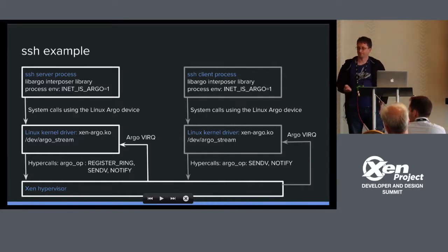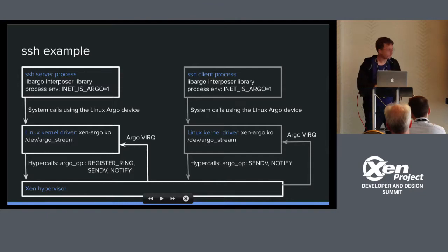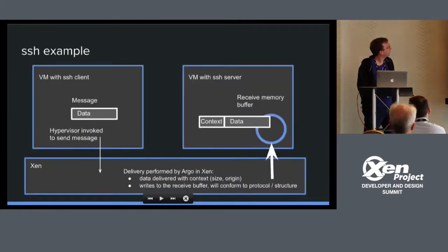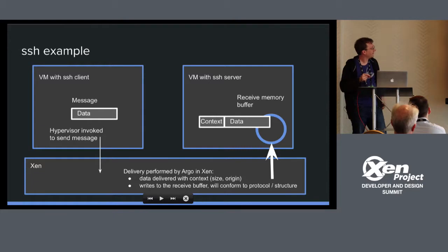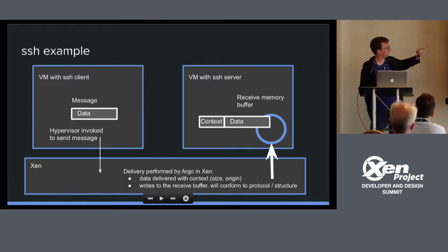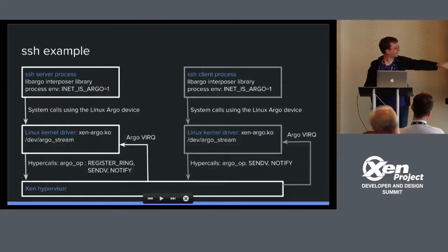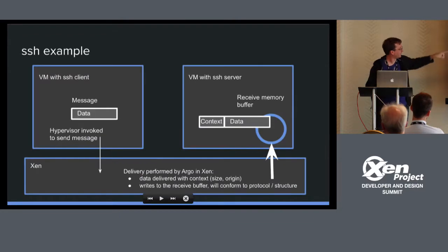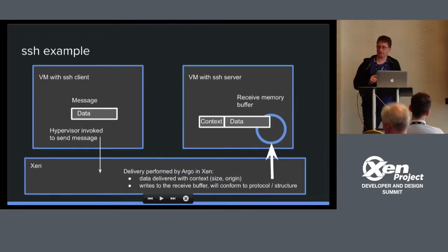This is basically a specialization of the HMX diagram shown earlier. When Argo is working this way, it is the hypervisor performing the data copies into the registered ring buffer.